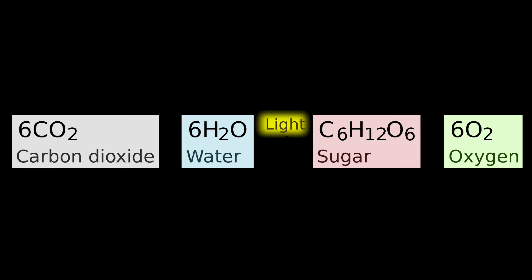So the reactants of photosynthesis are carbon dioxide and water. Now when they go through light energy, which is sunlight, the products of this are glucose and oxygen. So remember that carbon dioxide plus water goes to glucose and oxygen when exposed to light energy.